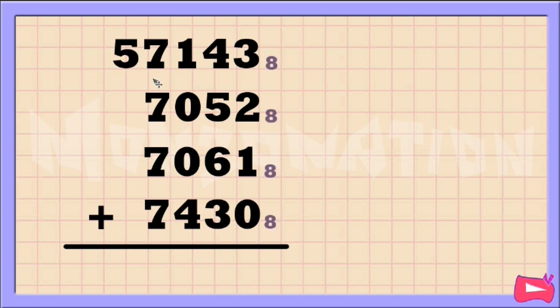We have 57143 base 8 plus 7052 base 8 plus 7061 base 8 plus 7430 base 8. Now let's start solving the first column.